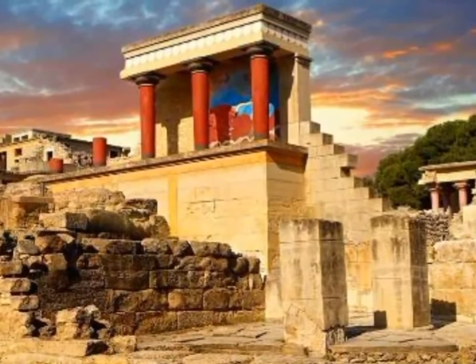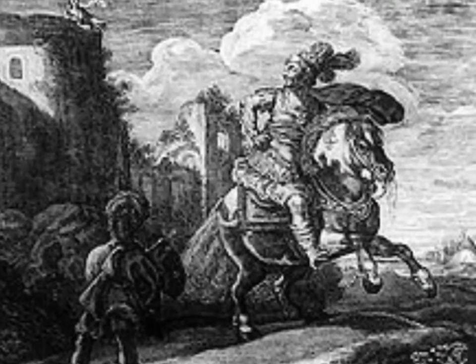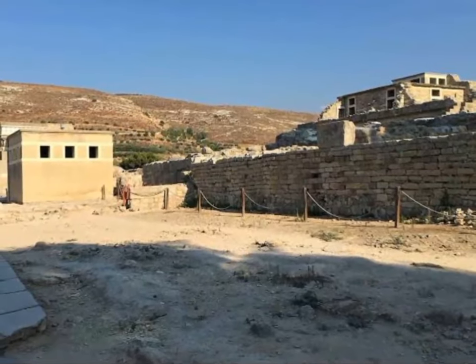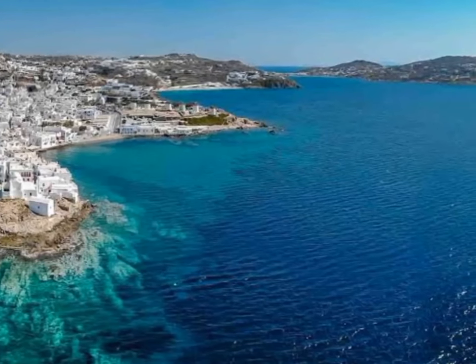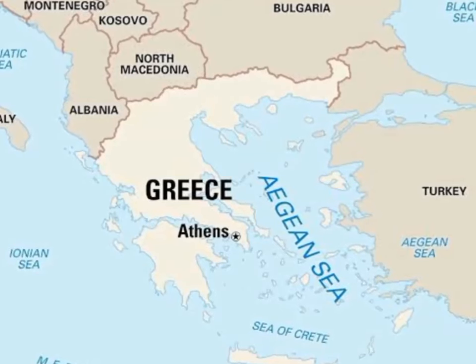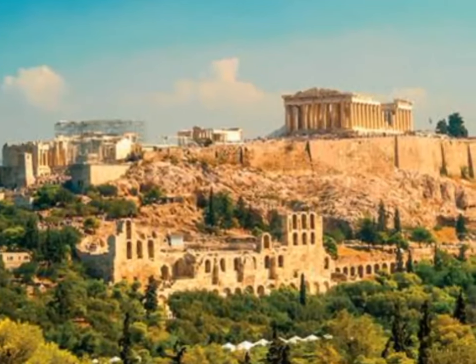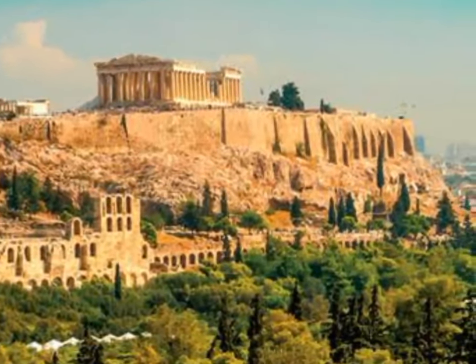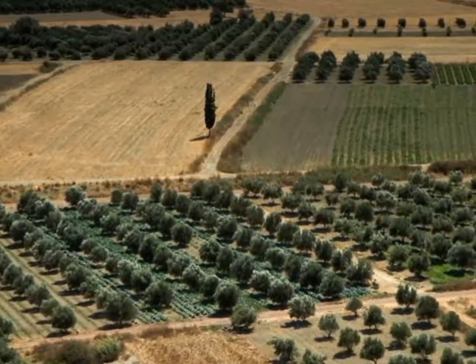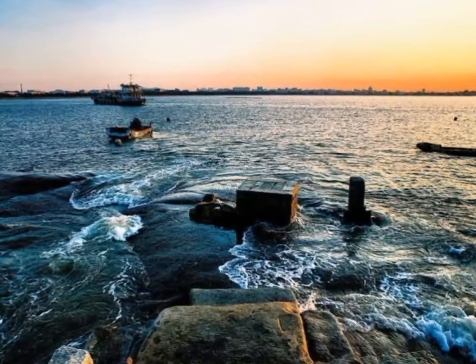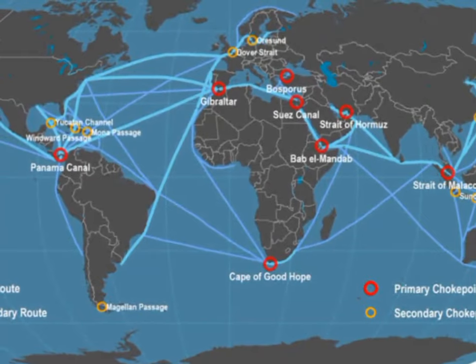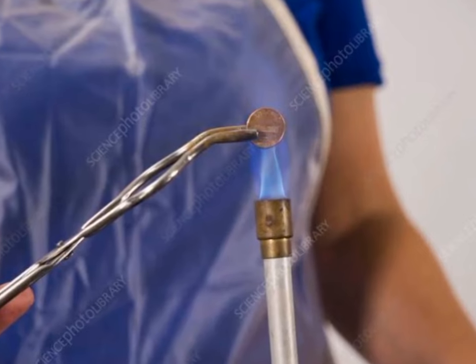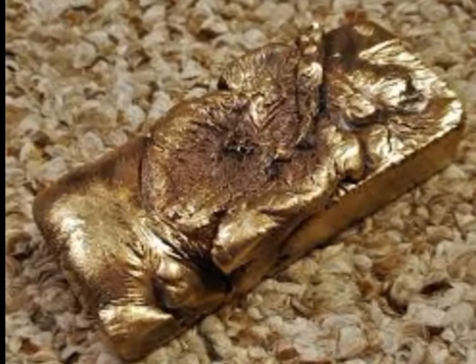Minoan civilization was named after the legendary King Minos and emerged during the Bronze Age on the island of Crete, in the Aegean Sea at the eastern end of the Mediterranean. From about 3000 to 2500 BCE, the early Minoan people led a basic agricultural existence. But by about 2100 BCE, they had built up a prosperous maritime trade with countries around the Mediterranean, involving tin and combining it with copper from Cyprus to make bronze, the key metal of the time.